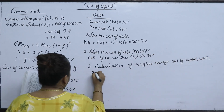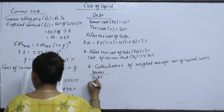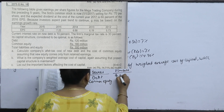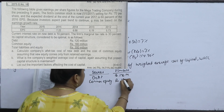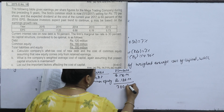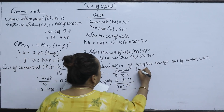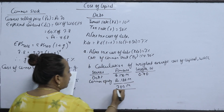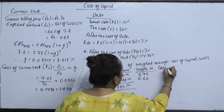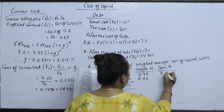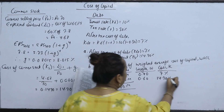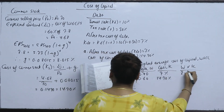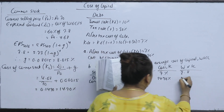WACC calculation: sources are debt of 120 million and common equity of 180 million, totaling 300 million. Weight of debt: 120 divided by 300 is 0.40; weight of equity: 180 divided by 300 is 0.60. Cost of debt is 7% and common equity is 14.70%. W times K: 0.40 into 7 is 2.8, and 0.60 into 14.70 is 8.82.